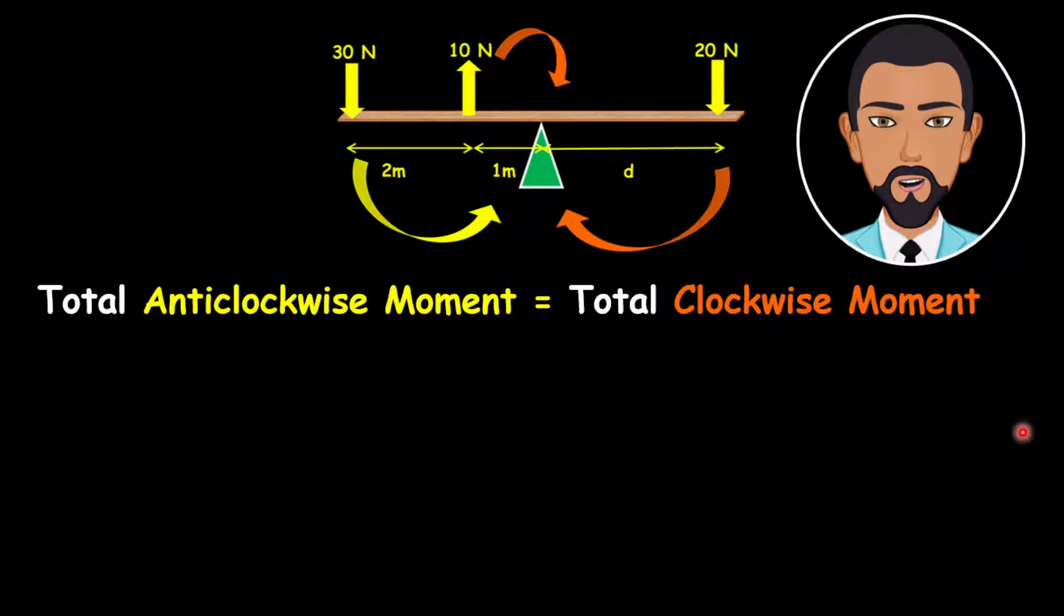And so from this, we can go ahead and start to calculate our clockwise moment and our anti-clockwise moment. Remember that a moment is the force multiplied by the perpendicular distance. So let's start with our 30 newton force that is causing an anti-clockwise moment indicated by this yellow arrow.